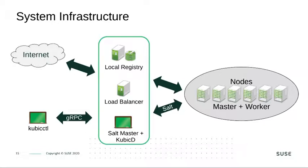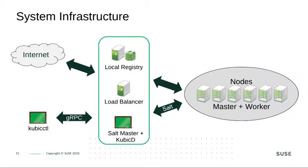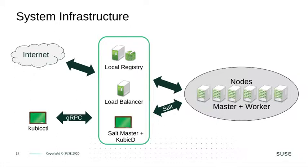The setup has an Edge Gateway in the middle, which is connected to the Internet on one side and to the Kubernetes cluster on the other. It has a local registry from where the cluster can pull container images. The Edge Gateway can fill the local registry either via the Internet if there is a connection, or you can fill it up with a USB stick. There is a load balancer, a SOLID master, and kubic-d — our daemon to coordinate the deployment of Kubernetes with the help of kubeadm on the cluster.